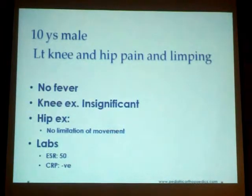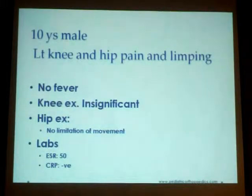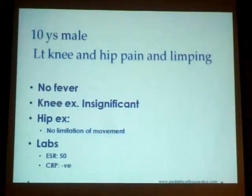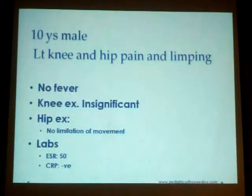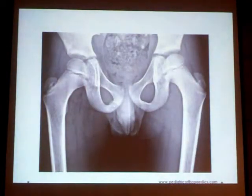The first case is a ten-year-old who presented with left knee and hip pains with limping. There was no history of fever. Knee examination was non-significant. Hip examination showed no limitation of movement whatsoever. The ESR and CRP were non-significant, as was the complete blood count.